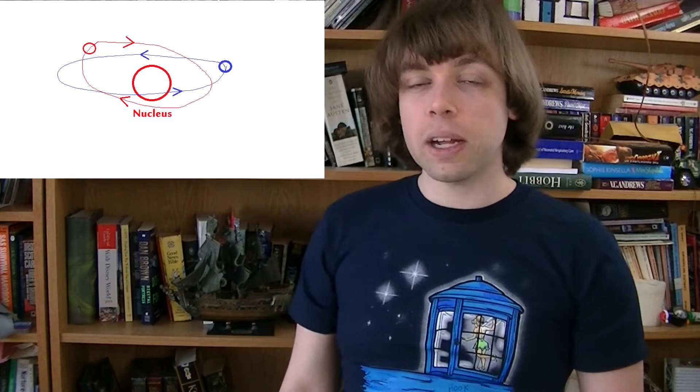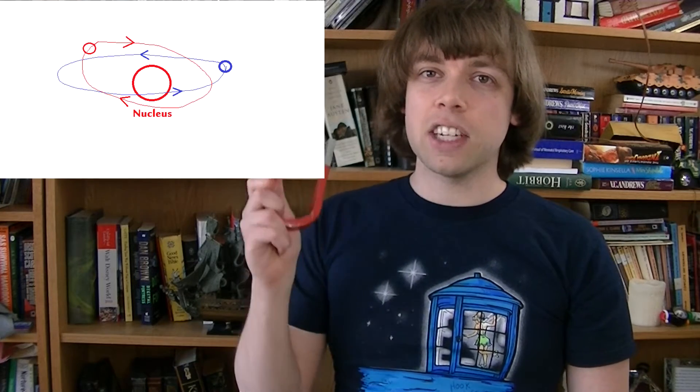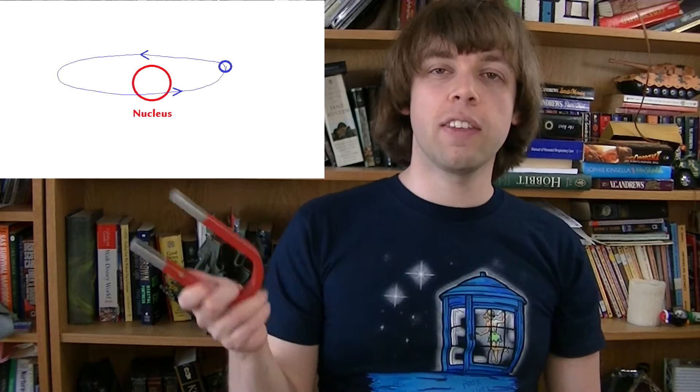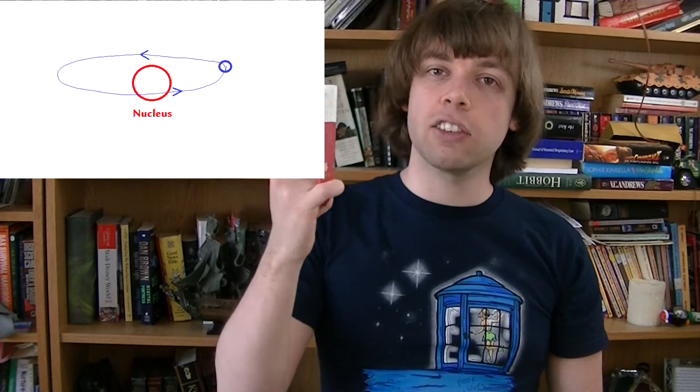But in some special magnetic materials, like iron for example, there's an imbalance of electron orbits, and that leads to each atom acting like a tiny magnet. They essentially have an odd number of electron orbits.